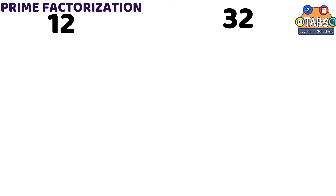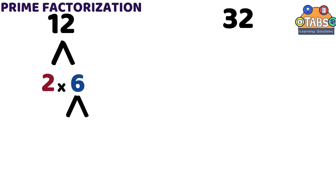Let us start with 12. The factors of 12 are 2 and 6. While 2 is a prime number, 6 is not, so let us get the factors of 6. The factors of 6 are 2 and 3. Both 2 and 3 are prime numbers, so we can stop right here. The prime factors of 12 are 2 times 2 times 3.